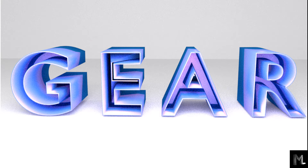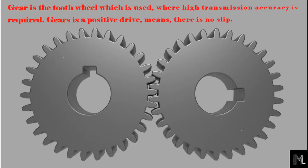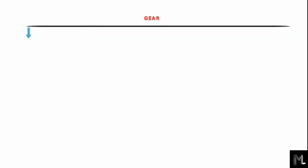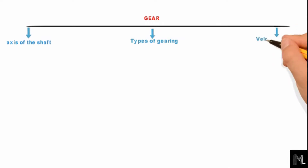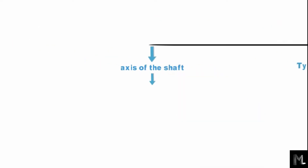Today I am going to discuss a very important topic which is called gear classification. Here is the tooth wheel which is used where high transmission accuracy is required. Gears are a positive drive, meaning there is no slip. Gears are classified according to different criteria: number one, on the basis of the angle between the axis of the shaft; number two, on the basis of the types of gearing; number three, on the basis of the speed of the gear.